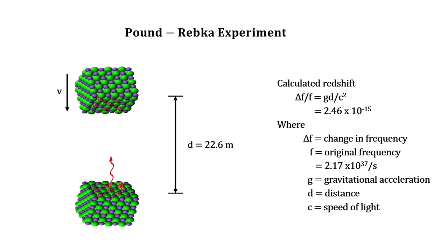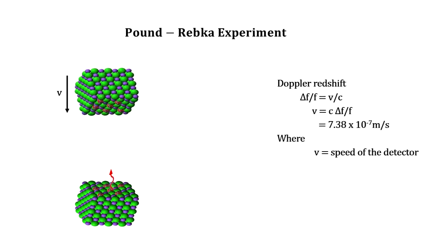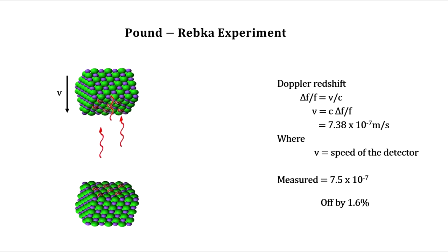We get the amount the frequency changed using the well-understood relativistic Doppler redshift equation, just like the Doppler shift in starlight. These results came in within 1.6% of the value predicted by Einstein's field equations using Schwarzschild's metric.